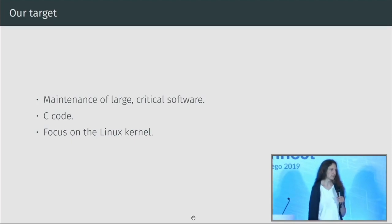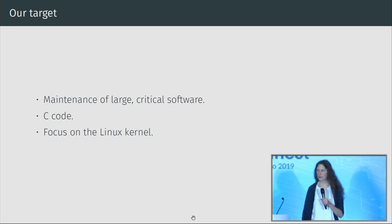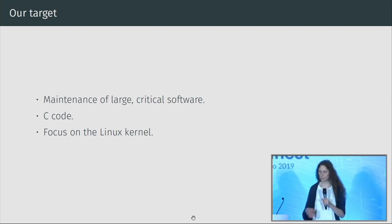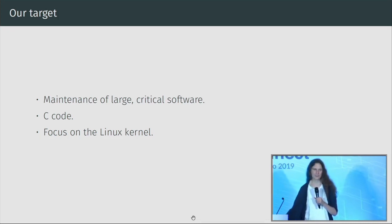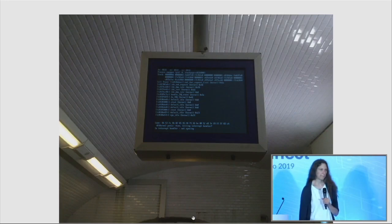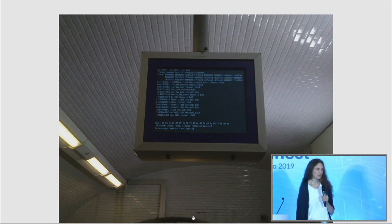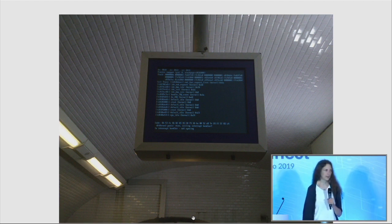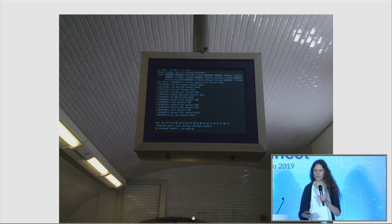Our interest is in the maintenance of large and critical software code written in C. We've mostly focused on the Linux kernel, but Coccinelle is used for other C code. When you make an open source project, you only find out what people are doing with it when they complain. To give an idea of our target, here's a picture of the Paris Metro — you can see the curved walls, the white tiles, and in the middle a monitor.